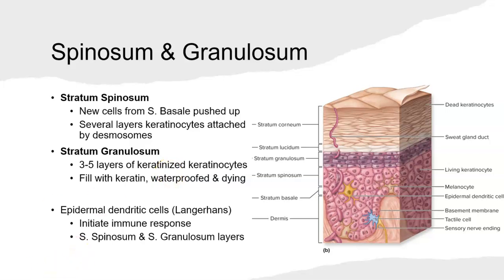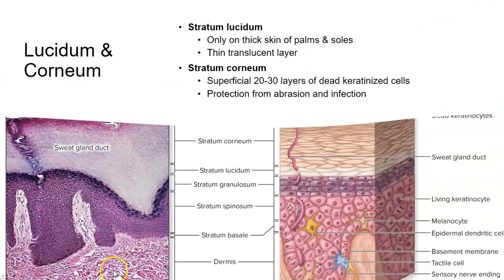The stratum lucidum is only two to three layers thick. The cells are dead keratinocytes, and this layer is only found in thick skin — on the palms of your hands and the soles of your feet. It is a very thin, translucent or lucid layer.